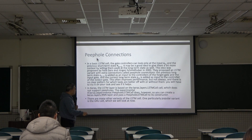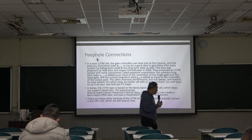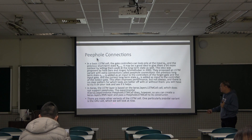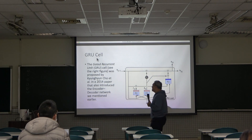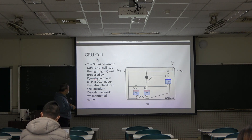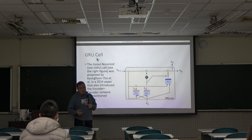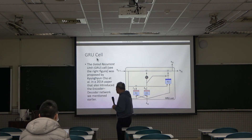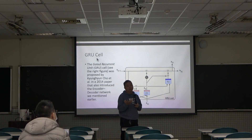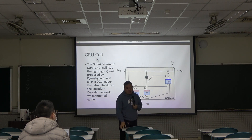There are other variants of the LSTM cell. The second very famous one is called GRU cell. GRU stands for Gated Recurrent Unit. This was proposed by Kyunghyun Cho in a 2014 paper. This paper is very important because not only did they propose the GRU cell, they also proposed the encoder-decoder architecture — which is one of the four commonly used RNN architectures.